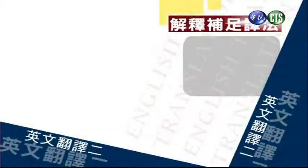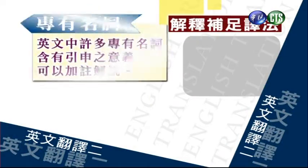那我们先说有三大类：一种是专有名词，一个是引用典故，还有略语。我们来看一看例子说明。先看专有名词。英文中许多专有名词还有隐含的意思，我们要把解释来说明。